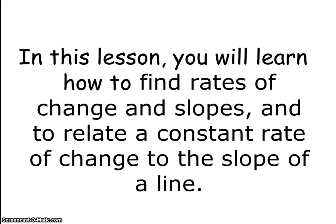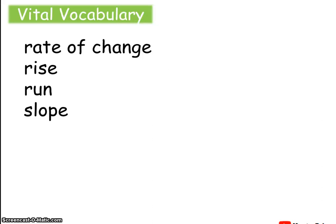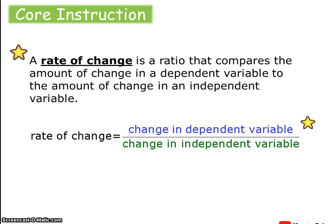In this lesson you will learn how to find rates of change and slopes and to relate a constant rate of change to the slope of a line. A rate of change is a ratio that compares the amount of change in a dependent variable to the amount of change in an independent variable. It can be written as a fraction where the dependent variable is in the numerator and the independent variable is in the denominator. It's important that we first identify the independent and dependent variables in a relation.